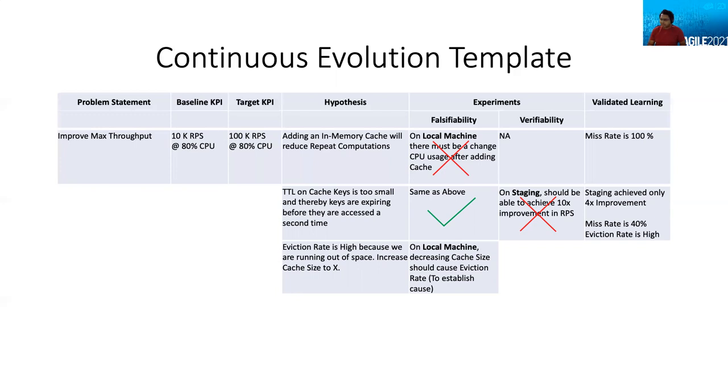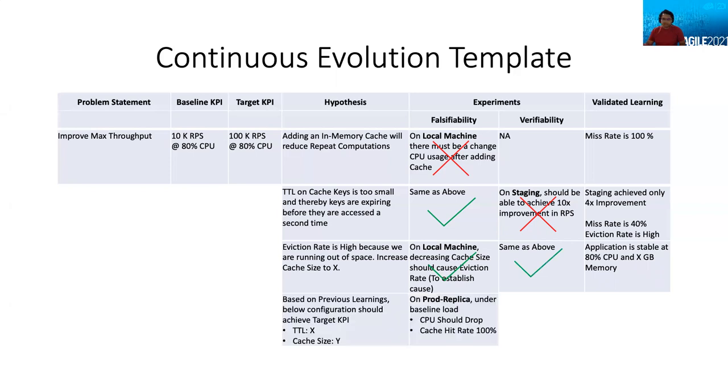So that's the falsifiability piece. If this itself fails, adding a cache makes no difference. I don't need to verify it. And I try to investigate the issue and I realize the miss rate of 100% on the machine, because of which I'm not able to see any discernible difference in the behavior of the application. Now I further hypothesize that the miss rate is 100% because the TTL is too small. So I fix the TTL issues and try the experiment again. And this time it works. So I move towards verifiability on a higher environment. And this time staging and the strategy I'm going to leverage now is to scale the trend. So we see that there is a 10x improvement that is being requested.